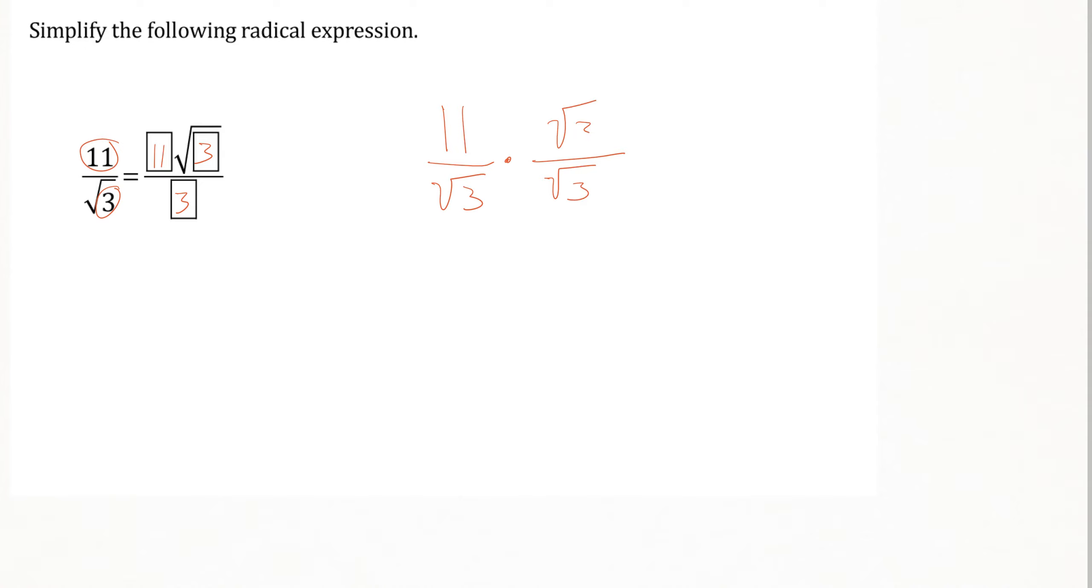We multiply it on top and bottom as a single fraction here, and when I multiply the top with the top, 11 times the square root of 3 gives me 11 square root of 3.